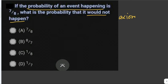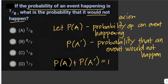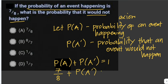Since we're given the probability of an event happening, we just subtract it from 1. The probability of an event happening plus the probability it would not happen equals 1. We plug in 7 over 8 for the probability of the event happening: 7 over 8 plus the probability it would not happen equals 1.